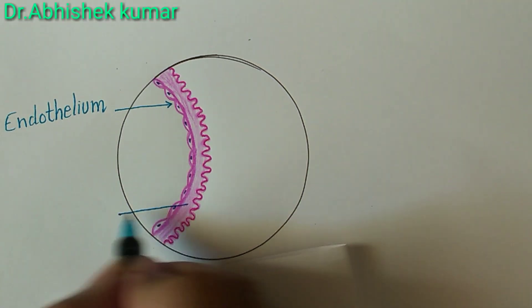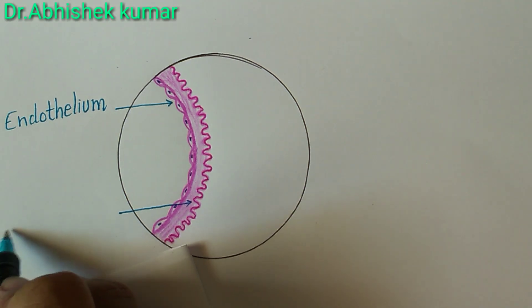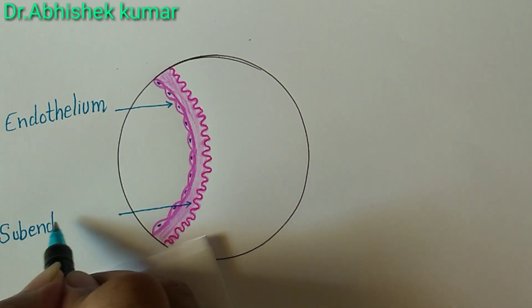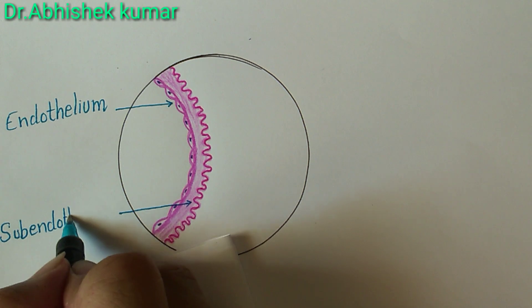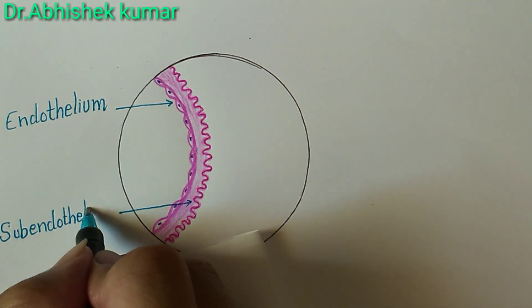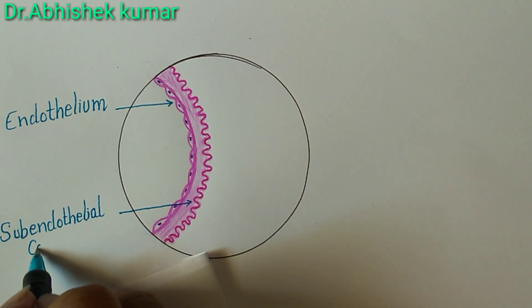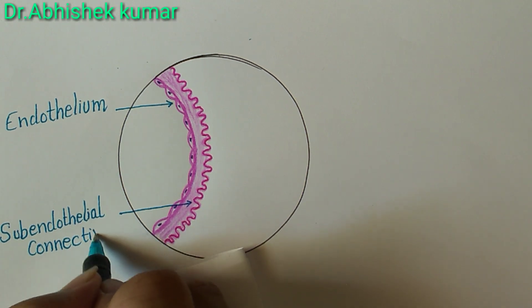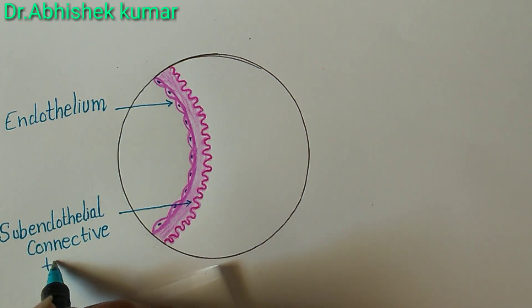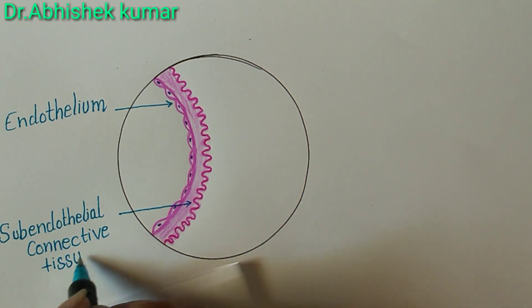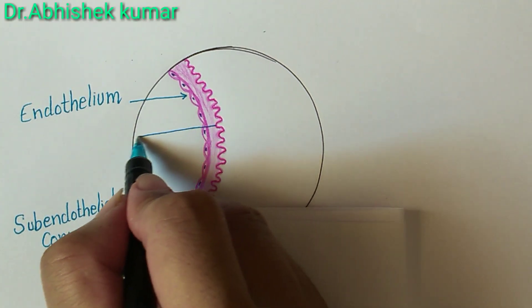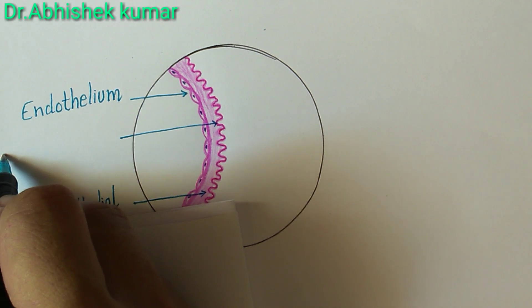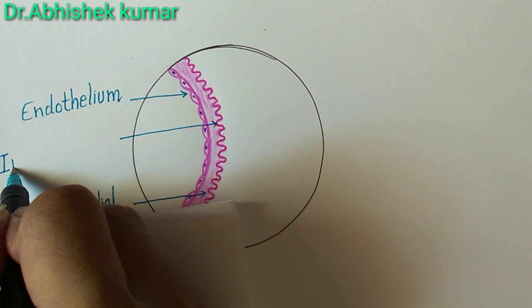Tunica media is basically below this one — we will label later on. But we can see here the sub-endothelium is present. Sub-endothelial connective tissue is present. And below that, this one is the internal elastic lamina.